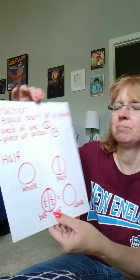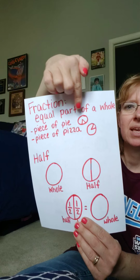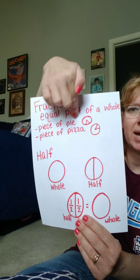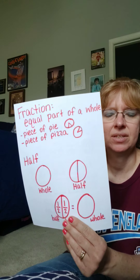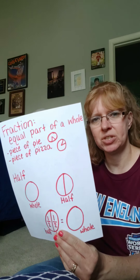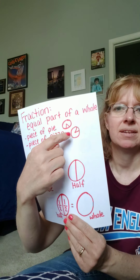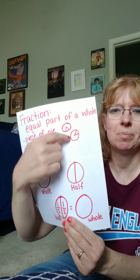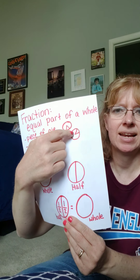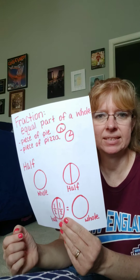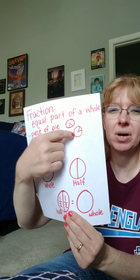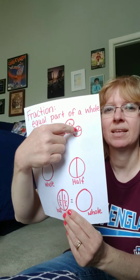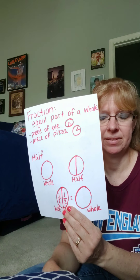I have pictures here to show you. There's a whole pie, and I cut one piece of it — I cut a fraction of that pie. There's a pizza, the whole pizza, and I cut out a piece — I took a fraction of it. So that piece is part of this whole pizza, but I'm taking it away.